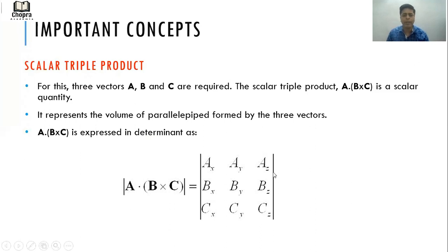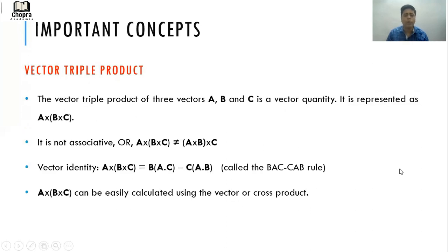What is a vector triple product? Vector triple product of three vectors A, B, C is a vector quantity. It is represented as A×(B×C). It is not associative, or we can say A×(B×C) is not equal to (A×B)×C.